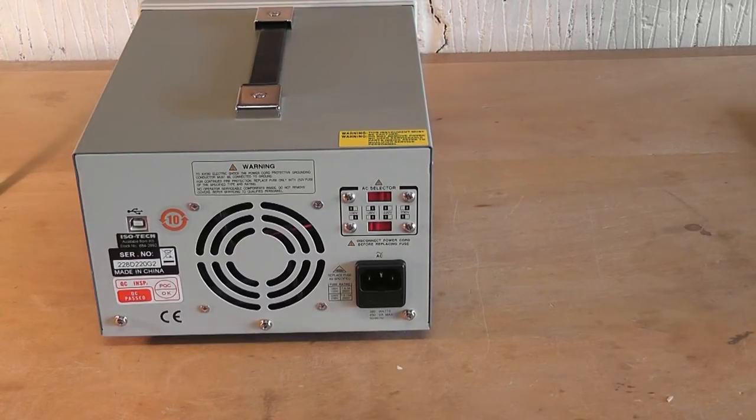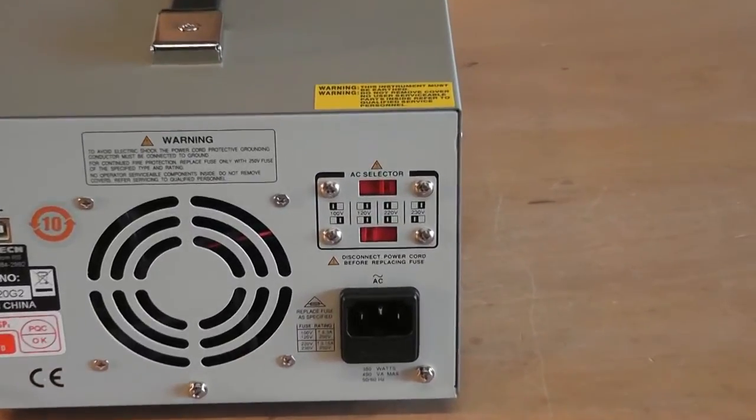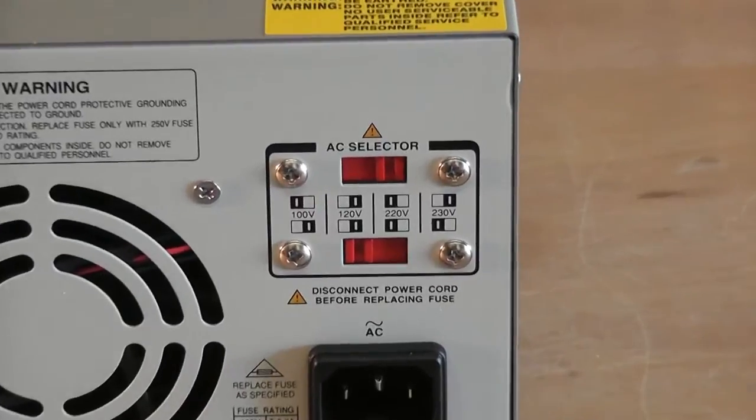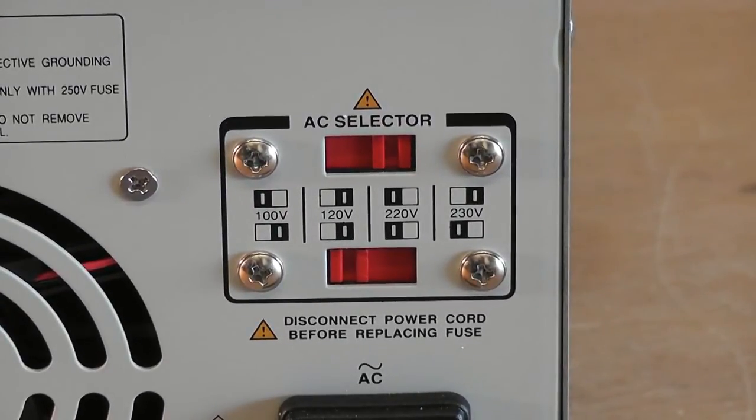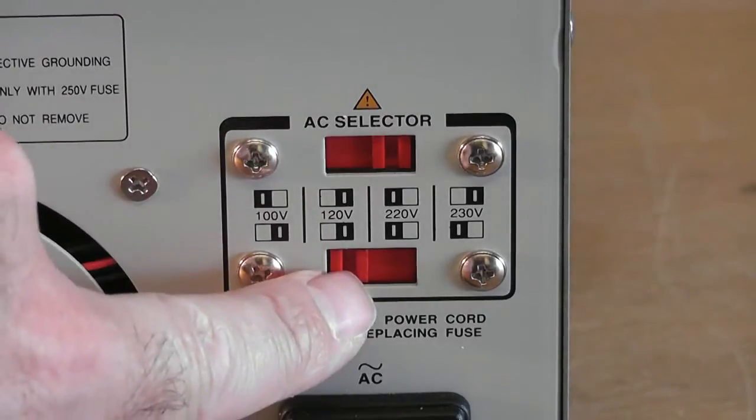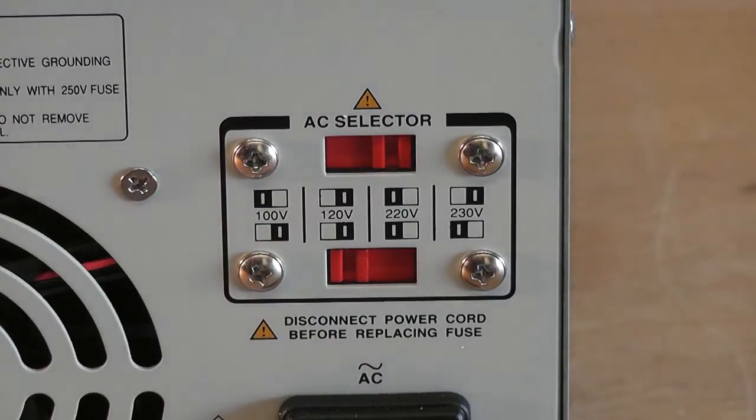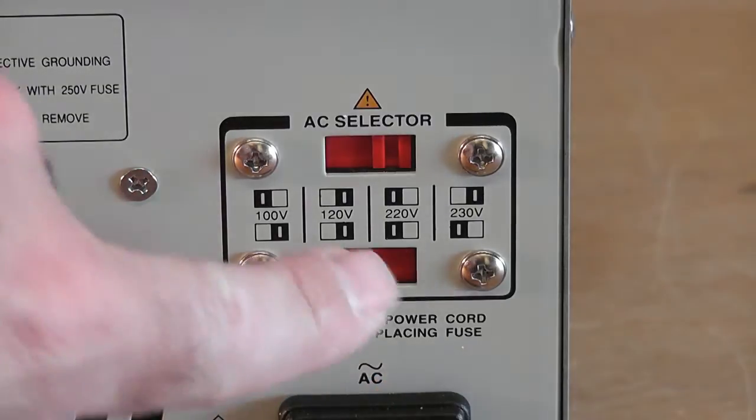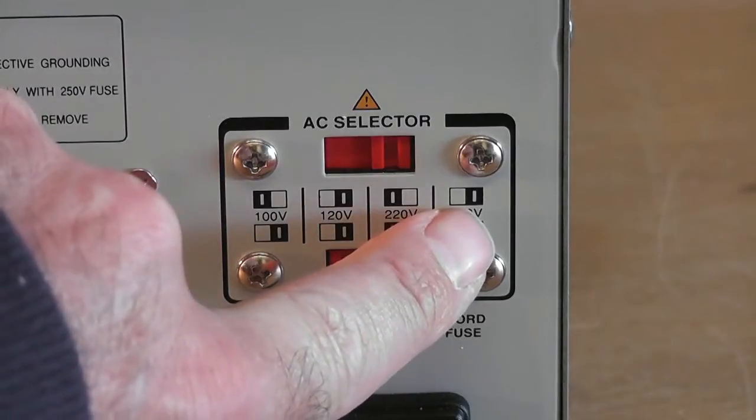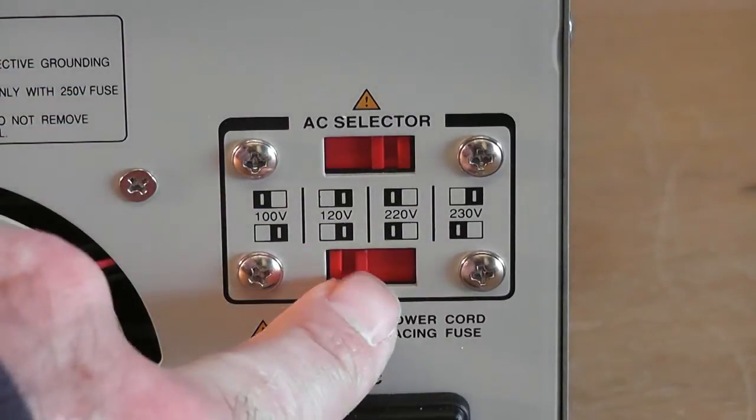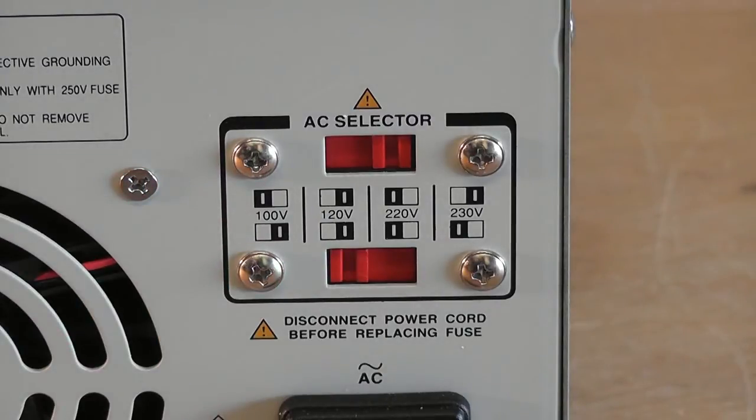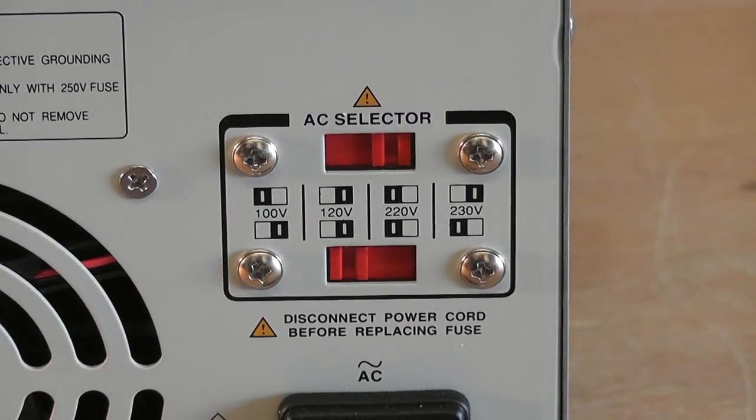But just before we power it up, let's take a look at the back. On the back here, you'll see there is the AC voltage selector. What you need to do is make sure that these two selectors are in the right position for the voltage in your country. You've got various different options: 100, 120, 220 and 230. I've got 230 volts in the UK, so that means the top one should be in that position, which it is. Let's connect it up and start using it.